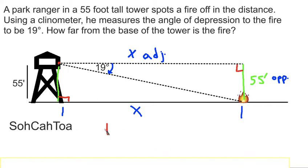So to set up our equation, we'll see that the tangent of 19 degrees is equal to the opposite length, which is 55, over the adjacent length, which is x.